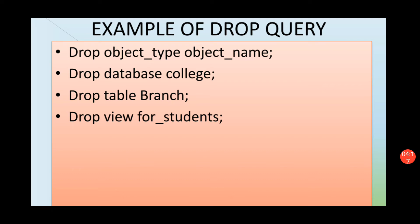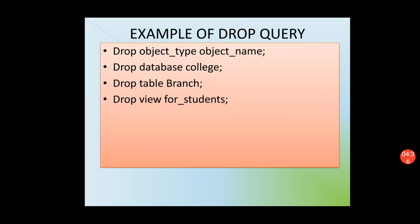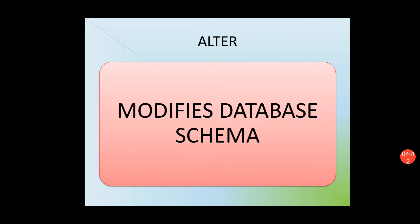When we execute DROP DATABASE college, the college database will be deleted. When we write DROP TABLE branch, the table named 'branch' inside the database will be deleted. And DROP VIEW for_students will clear the list of all students that were present in that view.